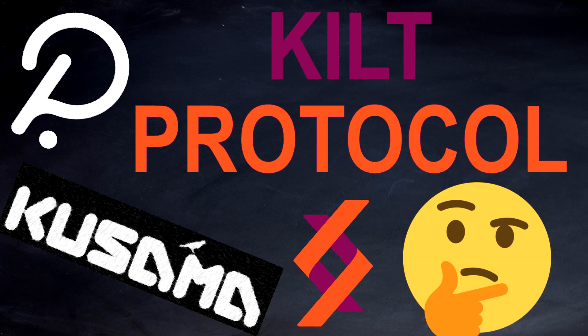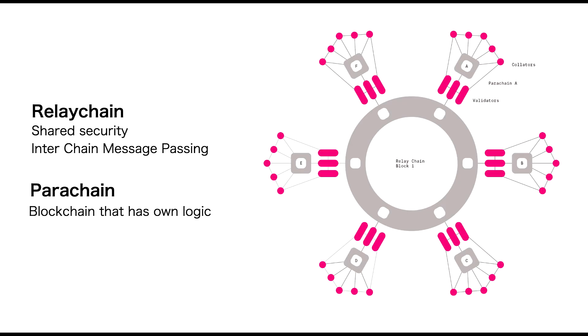Hey guys, welcome back. In this video we are going to go over the basic fundamental information you need to know regarding the KILT project. KILT is a project which has been developed within the Polkadot ecosystem. It was one of the first projects to successfully secure a parachain slot on the Rococo testnet. With Kusama parachain auctions coming up very shortly, we can expect KILT to be one of the first projects to secure a parachain slot on Kusama, and very likely on the DOT blockchain also.